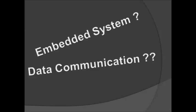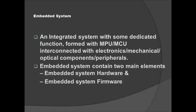Nowadays, if we look around ourselves, we will find various gadgets like cell phones, digital cameras, home security systems, ATMs, and many others. All these are nothing but embedded system devices. An embedded device is an integrated system with some dedicated functions, formed with a microprocessor unit interconnected with electronic, optical, and mechanical devices specific to the design application. Simply put, embedded systems are designed to do some specific task rather than be a general-purpose computer for multiple tasks.